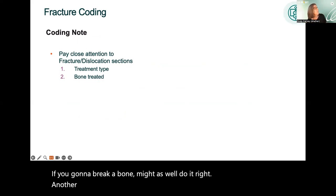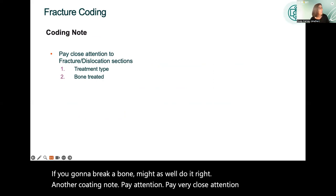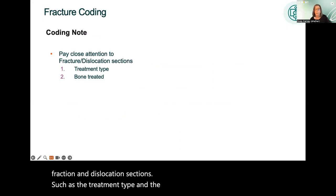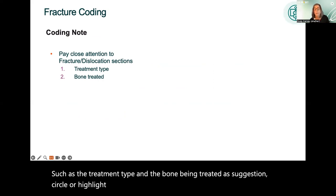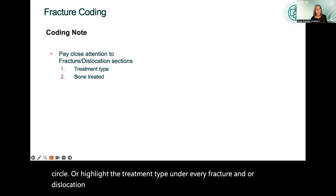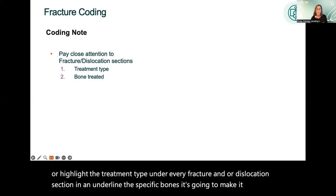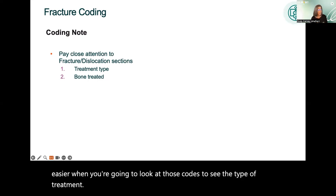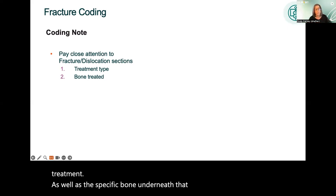Another coding note: pay very close attention to your fracture and dislocation sections — specifically the treatment type and the bone being treated. A suggestion: circle or highlight the treatment type under every fracture and/or dislocation section, and then underline the specific bones. This will make it easier when looking at codes to identify the type of treatment and the specific bone under that treatment type.